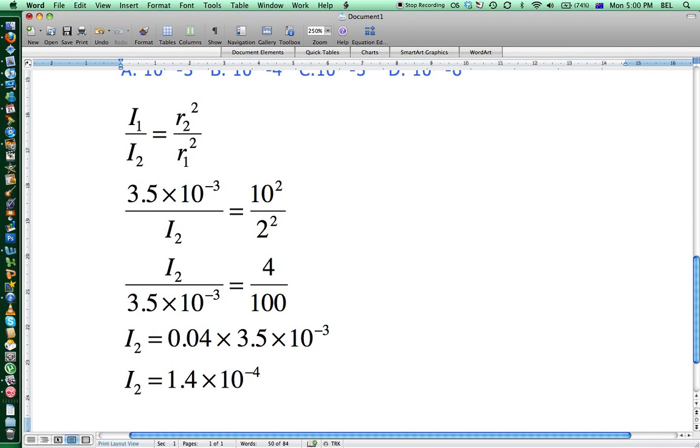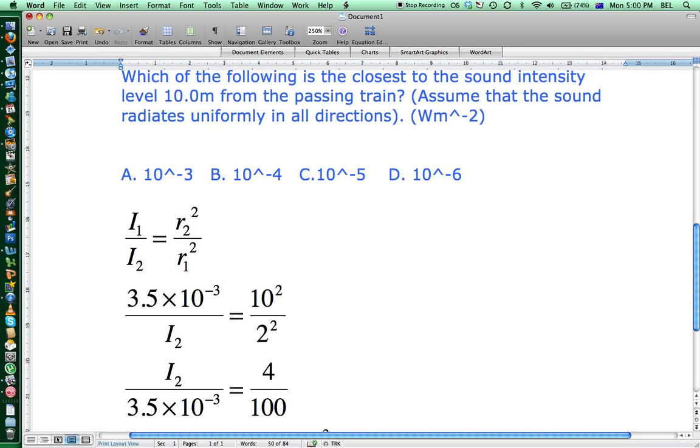So I2 equals 1.4×10^-4 watts per meter squared. The best answer there would be B, which is closest to that value. Okay, I hope that helped.